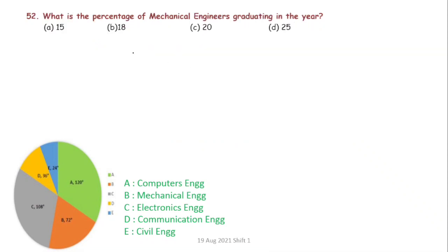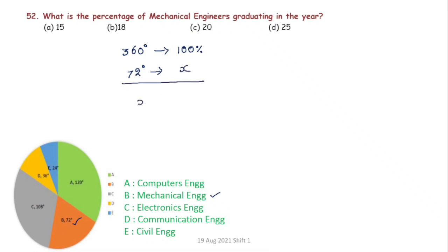What is the percentage of Mechanical Engineering graduates? Mechanical Engineering is 72 degrees. The complete circle is 360 degrees representing 100 percent. So the percentage is 72 divided by 360 into 100. This simplifies to 100 divided by 5, which equals 20 percent. The answer is 20 percent.